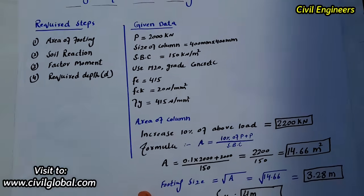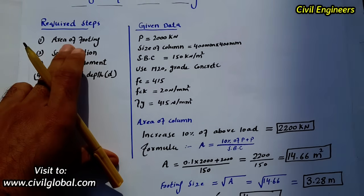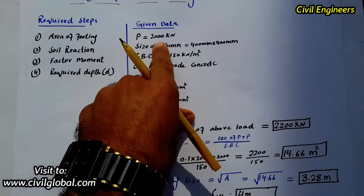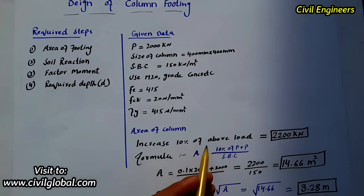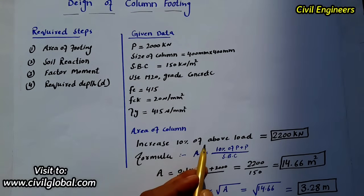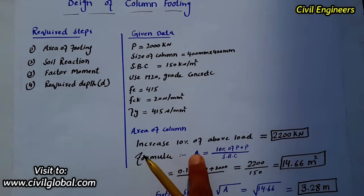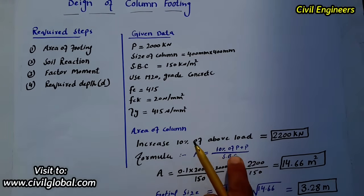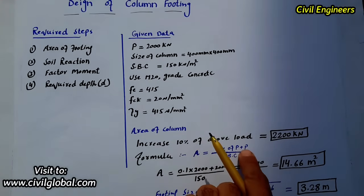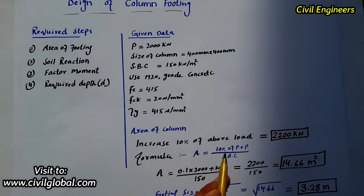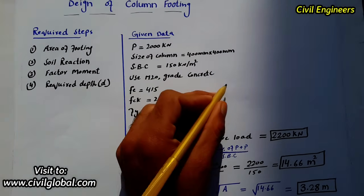Step 1: Area of footing. First, we increase the applied load by 10%. P is 2,000 kN, so 10% of 2,000 is 200 kN. The formula for the area of the footing is: Area = (10% of P + P) / SBC, which gives (200 + 2,000) / 150 = 2,200 / 150.